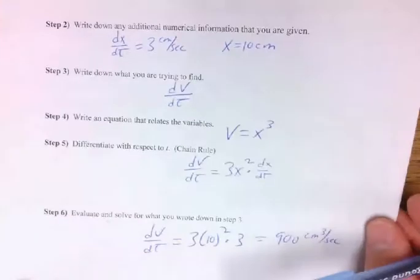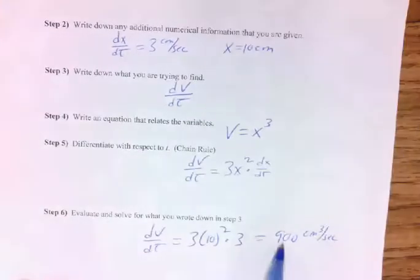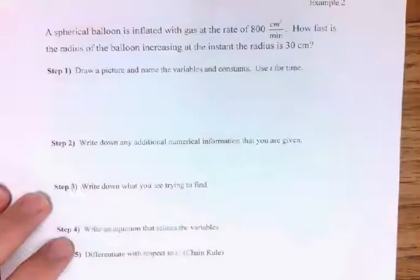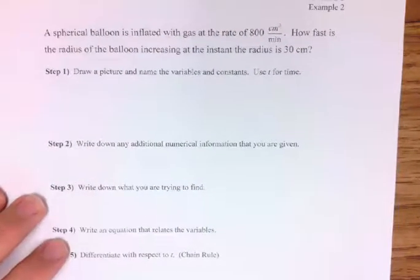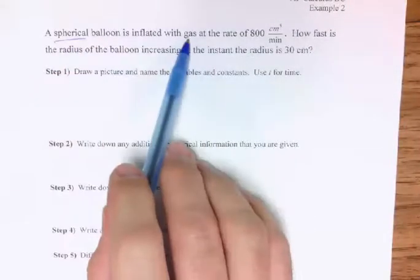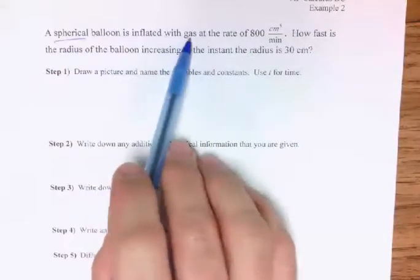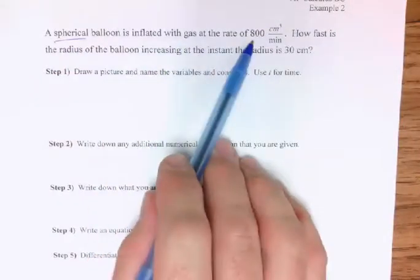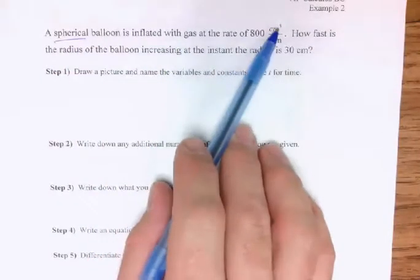We set everything up, we solved, and there was our final answer. We finished that one. Next example: we've got a spherical balloon inflated with gas at a rate of 800 centimeters cubed per minute — that's the volume rate, as you can tell from the units. How fast is the radius of the balloon increasing the instant the radius is 30?